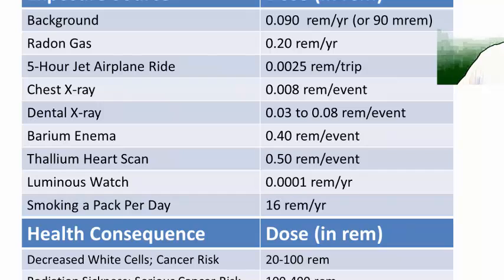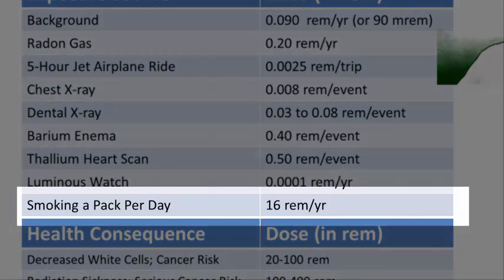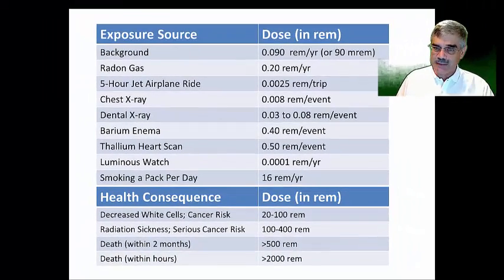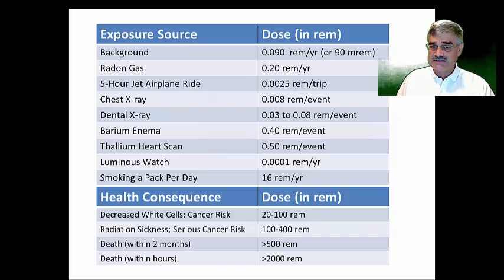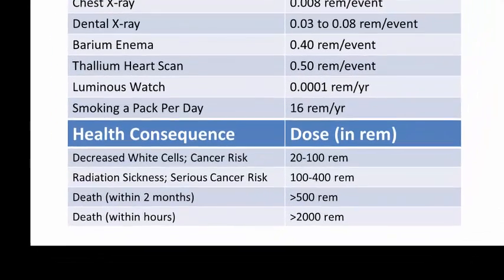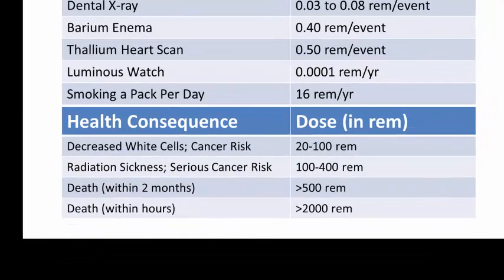There is one type of exposure to radiation so much larger than all the other common exposures — and that's smoking cigarettes. A pack-a-day smoker is exposed to 16 REMs per year. That is three times the maximum amount that OSHA, the Environmental Protection Agency, and the Nuclear Regulatory Commission set as the maximum allowable exposure. This is why the smoker is at risk for cancer, since 20 to 100 REMs per year can lead to decreased white cells and a risk for cancer.